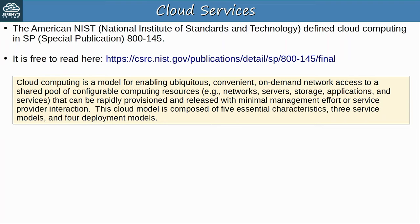Next is rapid elasticity: capabilities can be elastically provisioned and released, in some cases automatically, to scale rapidly outward and inward commensurate with demand. To the consumer, the capabilities available for provisioning often appear to be unlimited and can be appropriated in any quantity at any time. Customers can quickly expand the services they use in the cloud — for example add new VMs, expand storage, etc. — from a pool of resources that appears to be infinite. If you need to add 100 new servers right now, AWS isn't going to tell you there aren't enough resources.